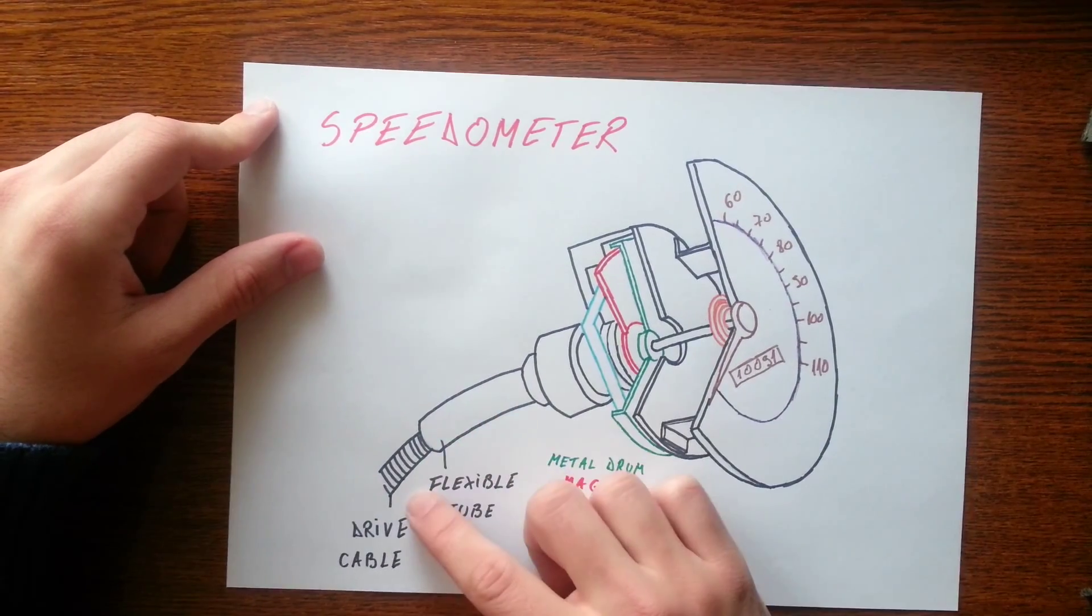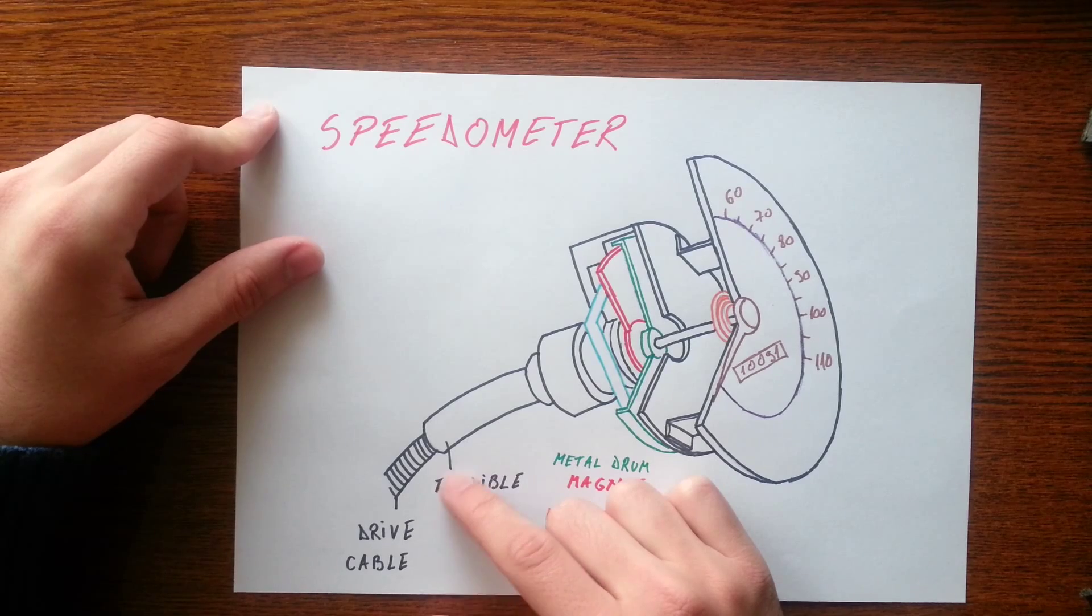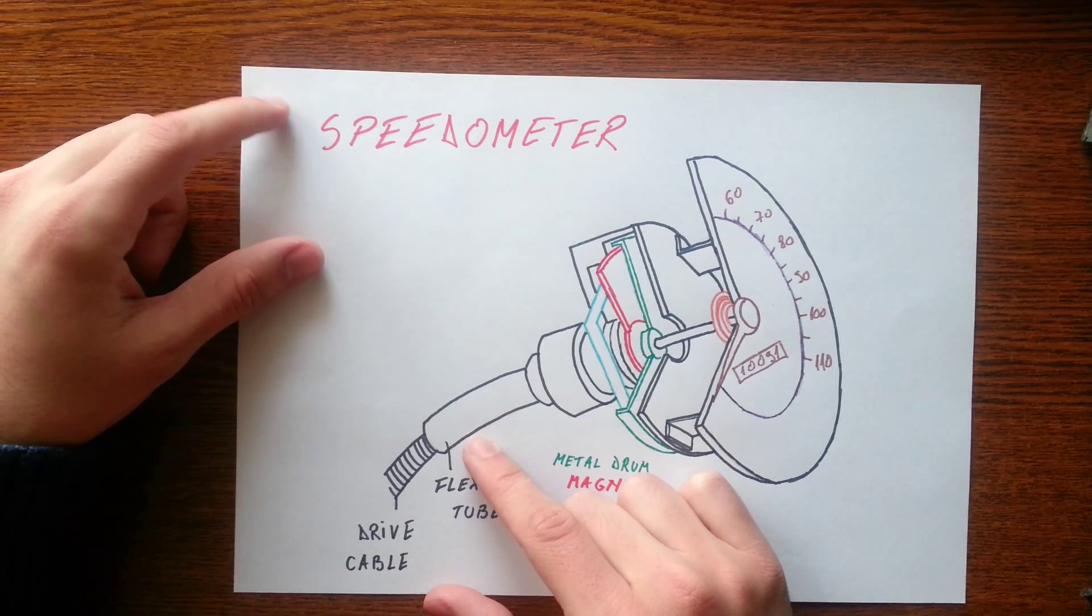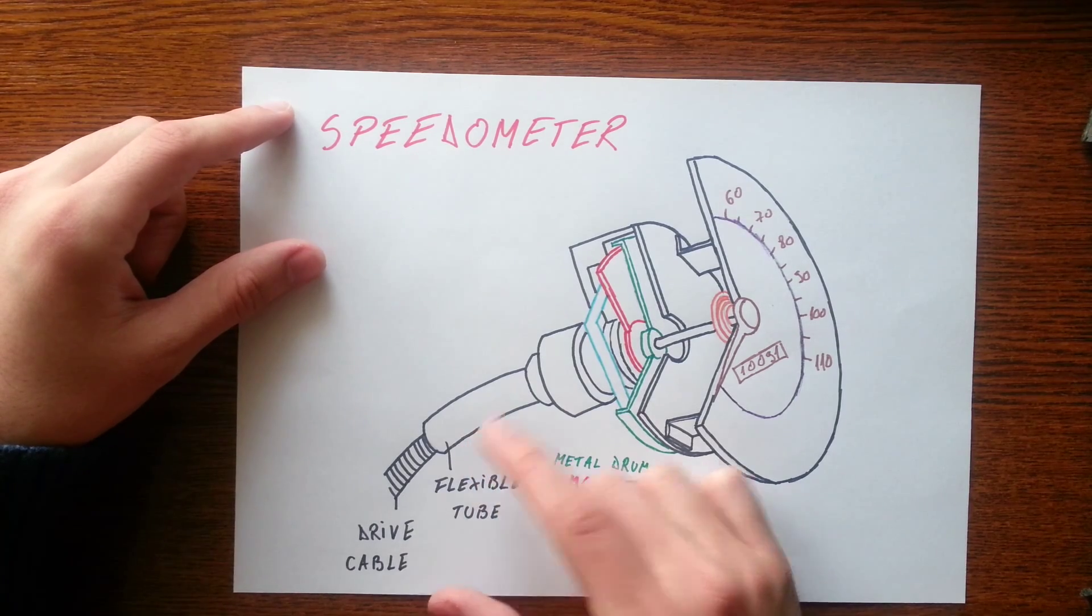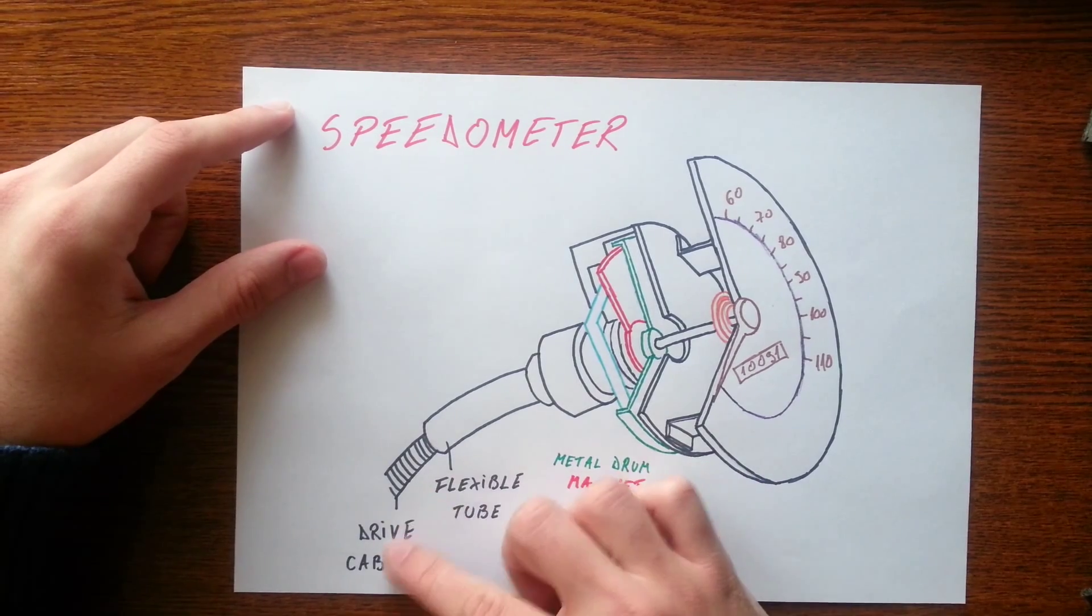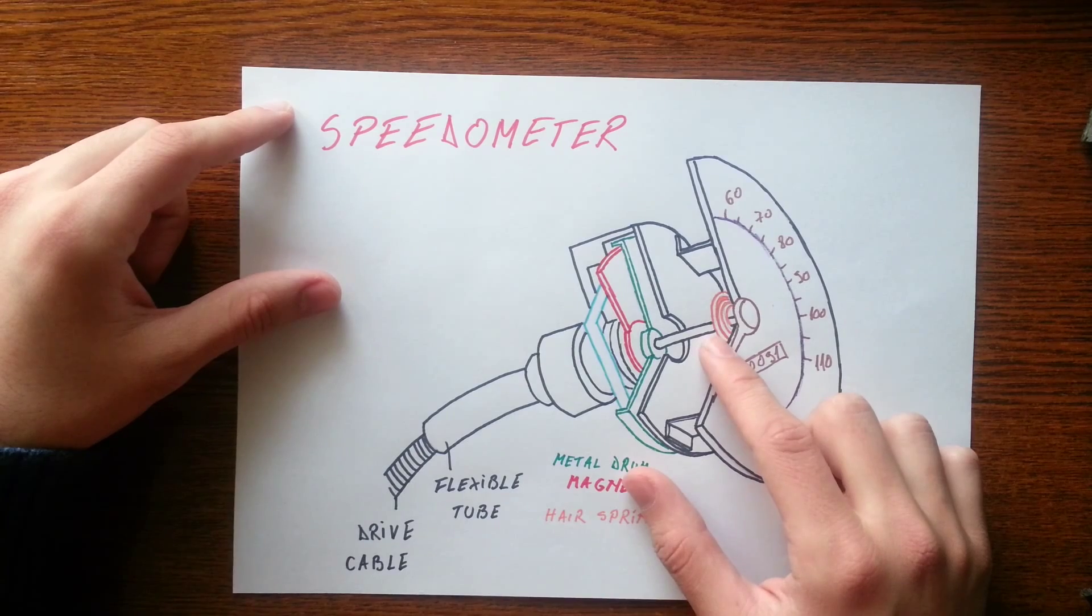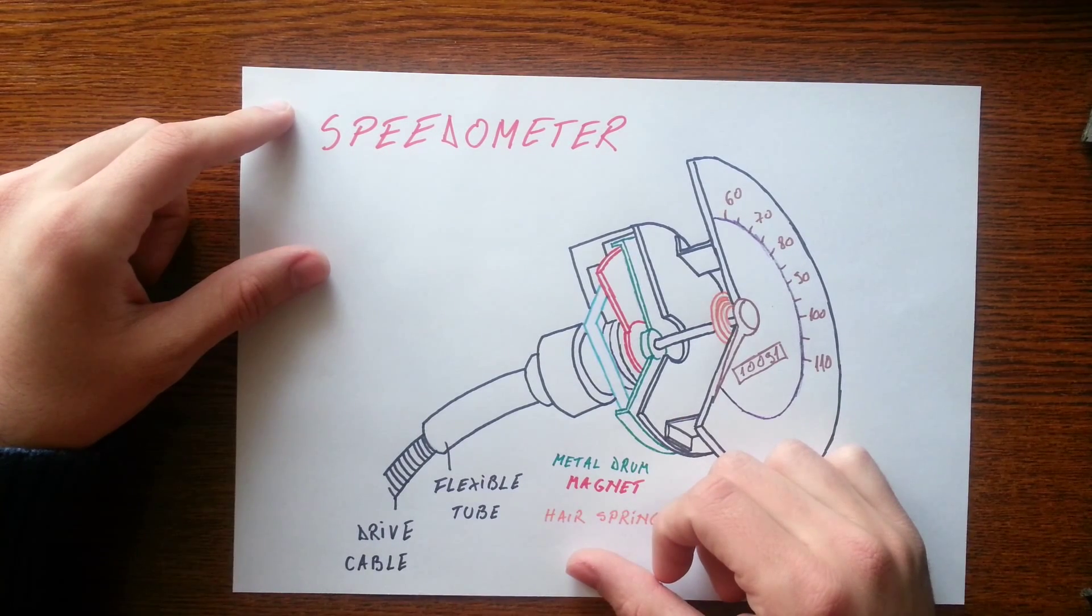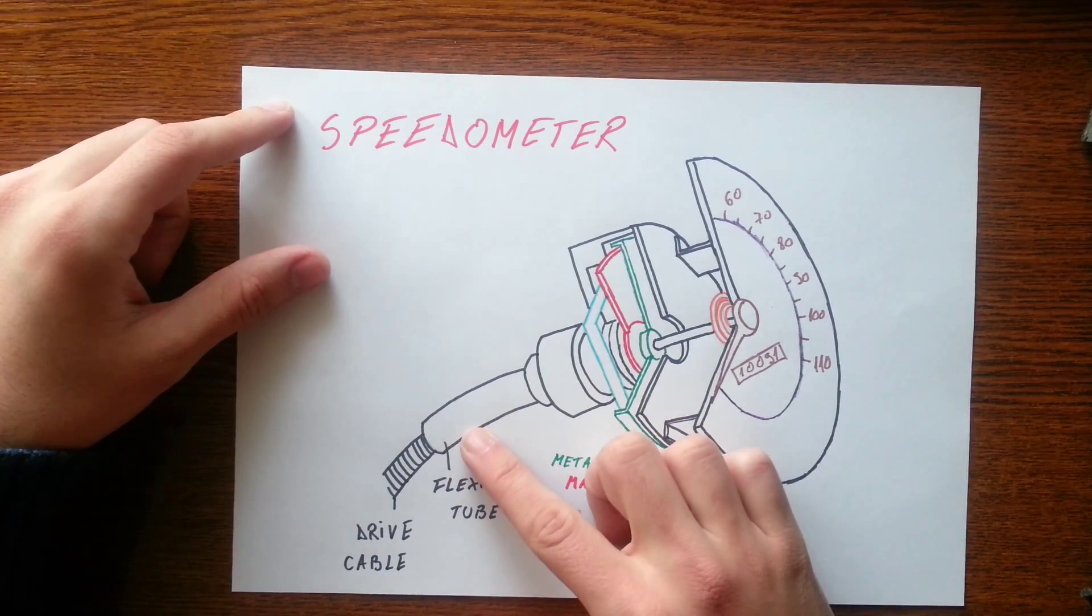The speedometer cable has an inner cable running inside the protective outer sheath. The ends of the speedometer inner cable are squared off and fit into squared holes in the driven pinion at the gearbox and in the back of the speedometer. So as the pinion rotates, driven by the gearbox output shaft, it causes the inner cable to rotate with it.